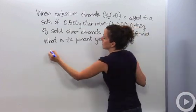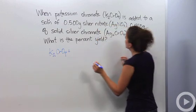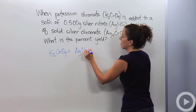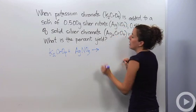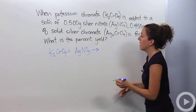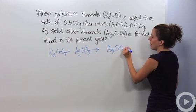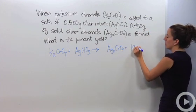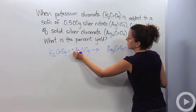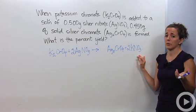We have K₂CrO₄ reacting with silver nitrate, AgNO₃. This is a double replacement reaction — we have two ionic compounds — producing silver chromate and potassium nitrate. Balancing it: we need a coefficient of 2 in front of AgNO₃ and a 2 in front of KNO₃. Now this is balanced.